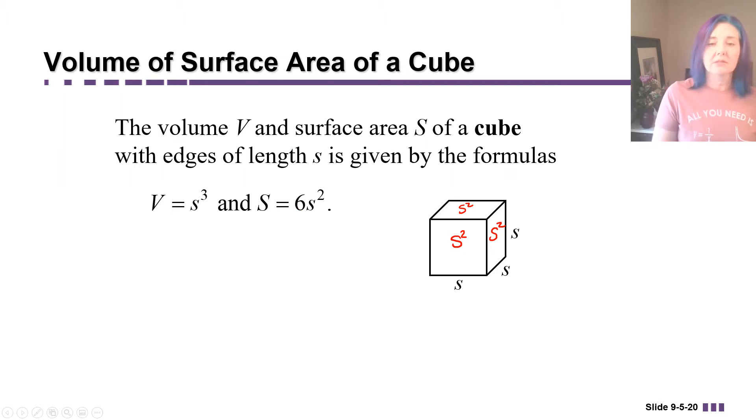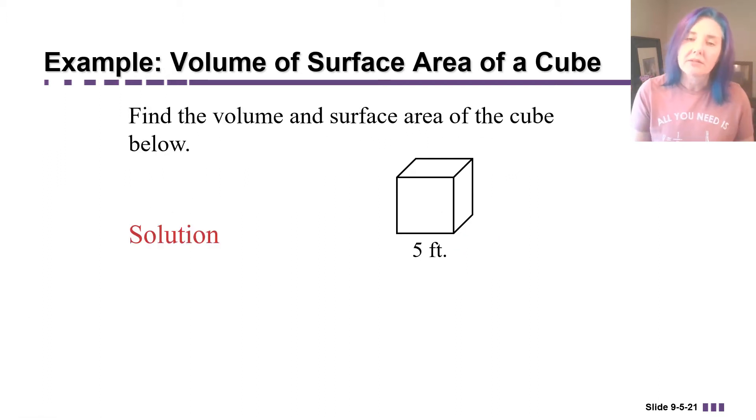So let's use these formulas. In this example, we're asked to find the volume and surface area of a cube, and it's labeled to have a dimension of five feet, which since we're told it's a cube, means that it has dimensions of five feet along every edge.